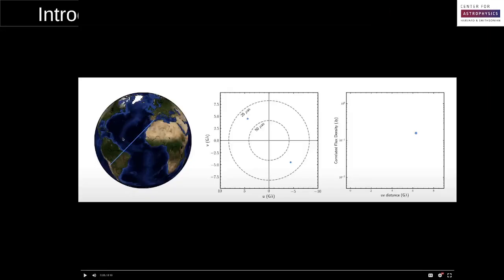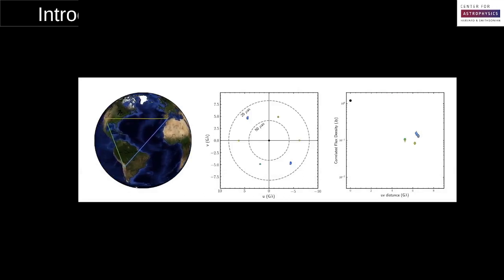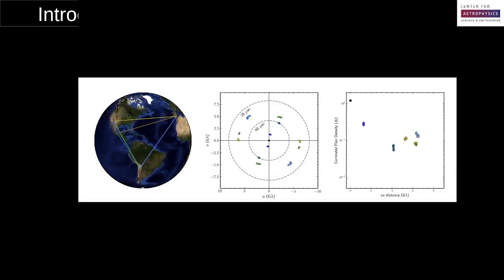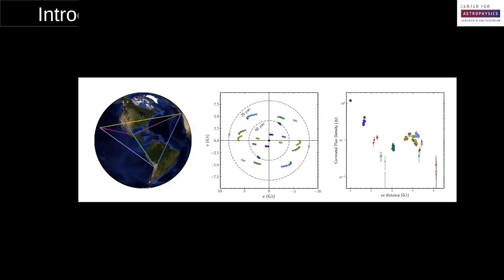So what does this mean? Well, if we have a single pair of telescopes, we measure a single location in the Fourier domain and its complex conjugate. Then, as the Earth starts to rotate, we sample different locations in the Fourier domain and our different image structures. As more and more telescopes start to get added in, we fill different regions of the Fourier domain.